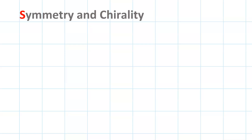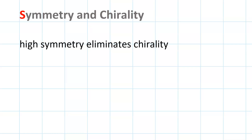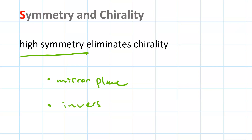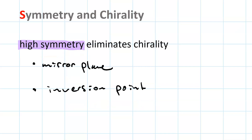Symmetry affects chirality. That is to say, if a molecule has a high degree of symmetry, despite having multiple chirality centers, the molecule itself may not be chiral. The two kinds of symmetry that typically eliminate chirality are a mirror plane or an inversion point. So, if you have a molecule that has multiple chirality centers but is highly symmetric and therefore not chiral, the molecule is meso.